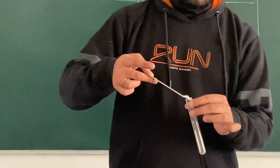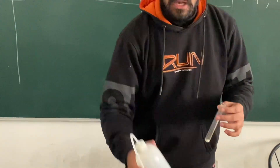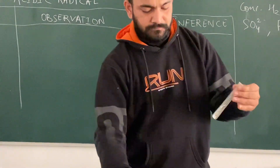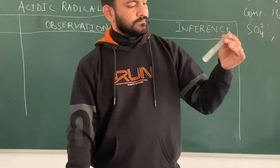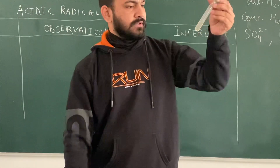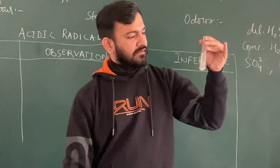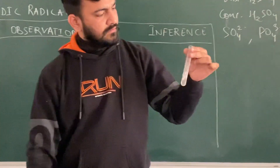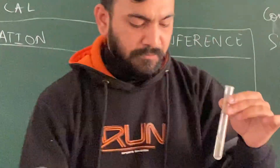Take a small amount of salt in the test tube. Add a small amount of distilled water and dissolve the salt. As you can see, some part of the salt is still left. Now the salt is completely dissolved.